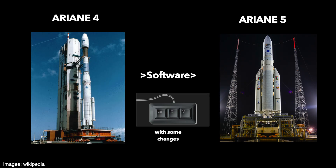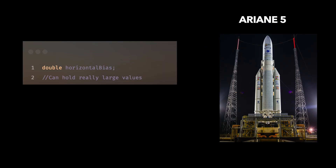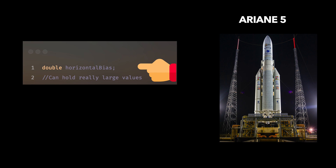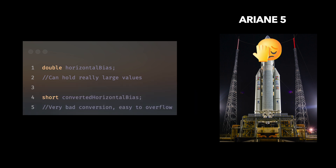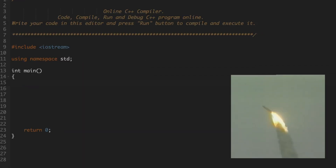The Ariane 5 rocket software was a modified version of the Ariane 4 software, and the crash was caused by a bug in the rocket's inertial reference system — the system the rocket uses to determine if it's pointing up or down. It's known as the horizontal bias, and the value was stored in a 64-bit floating-point variable, which can represent billions of values. This value would at some point be converted to a 16-bit integer, which can only represent 65,535 values.